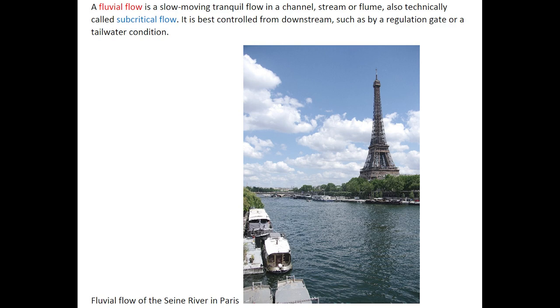Welcome to this short talk about fluvial and torrential flow in open channels. A fluvial flow is a slow-moving tranquil flow in a channel, stream, or flume, also technically called subcritical flow. It is best controlled from downstream, such as by a regulation gate or a tailwater condition.